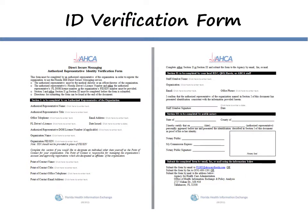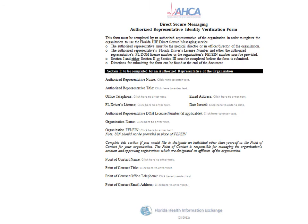The Identity Verification Form. As part of the vetting process, an authorized representative from your organization will need to complete the Identity Verification Form. This is a two-page document. The authorized representative must be the medical director or an officer-director of the organization. The first page is where the authorized representative provides identifying information — their Florida driver's license number and either their Department of Health license number or, for organizations without a license number, the FEI EIN number. This is also where the authorized representative can designate someone else to act as the organization's point of contact.